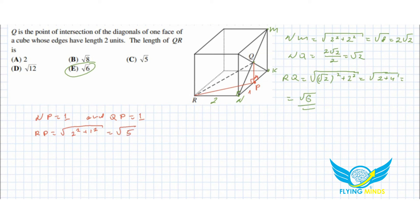And then RQ equals to square root of five squared plus one square, equals to square root of six.